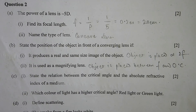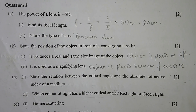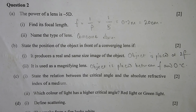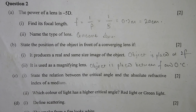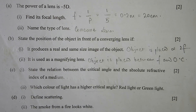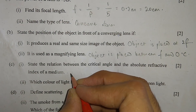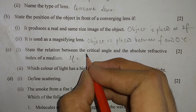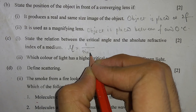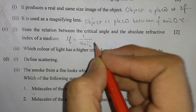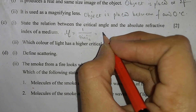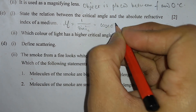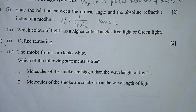Part C, number 1: State the relation between the critical angle and the absolute refractive index of a medium. Mu equals 1 divided by sin(ic), which equals cosec(ic).